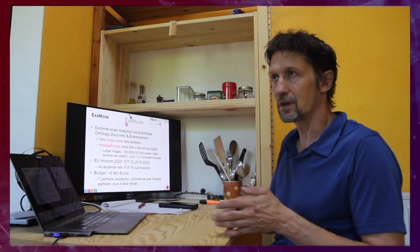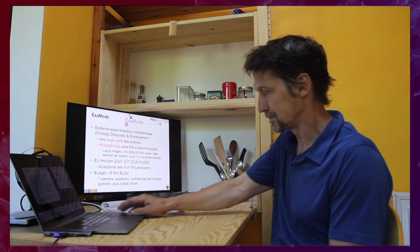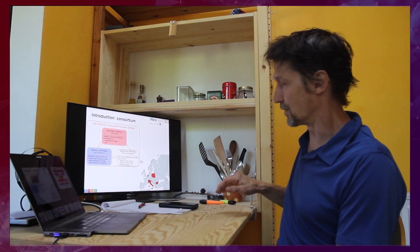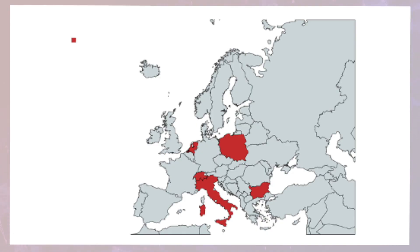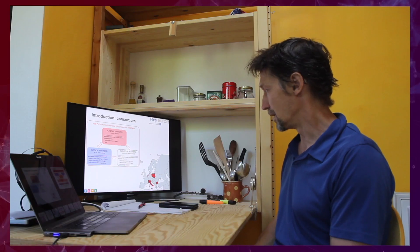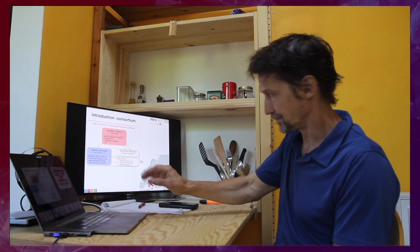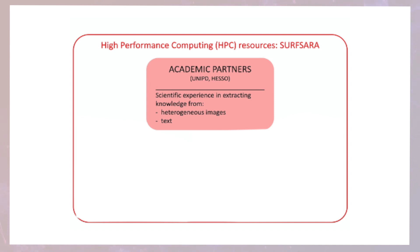Seven partners from various backgrounds with two academic partners, two hospital partners, two companies and a data center, the Dutch National Supercomputing Center. Just to show this also in geographical ways, we are spread out around Europe. We have two partners from Italy with one partner from Switzerland, two from the Netherlands and then from Poland and from Bulgaria.